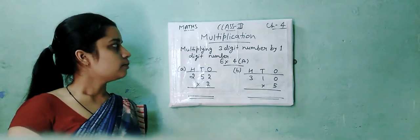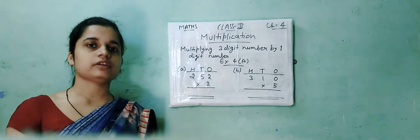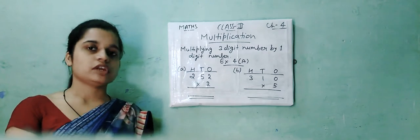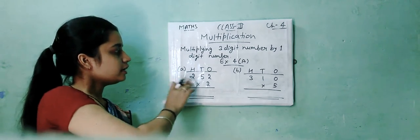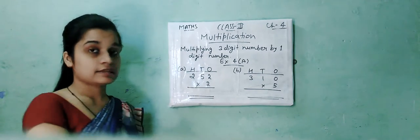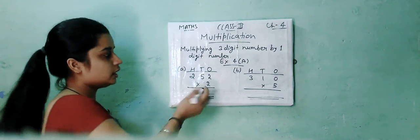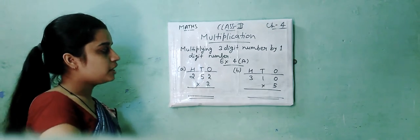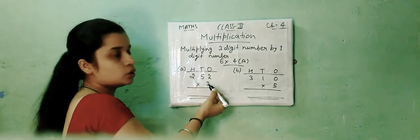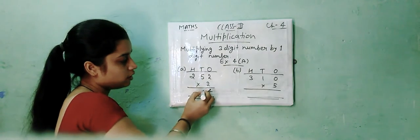Now here, multiplying three digit number by one digit number. Exercise 4A is related to this. We place it as hundreds, tens, and ones. Then multiply by one digit number. How to multiply? We will start from right side to left side. Okay, so firstly multiply ones place with one digit number. 2 into 2 is 4. Then move to the tens place. 5 into 2 is 10.